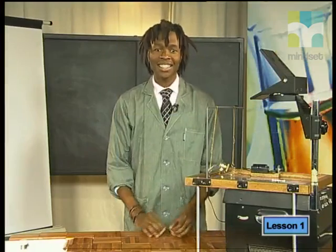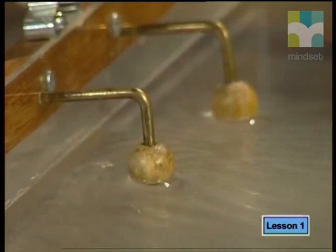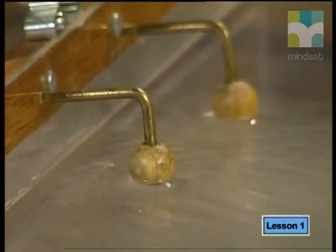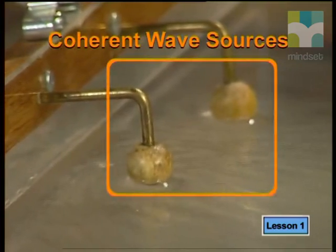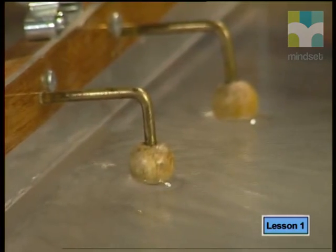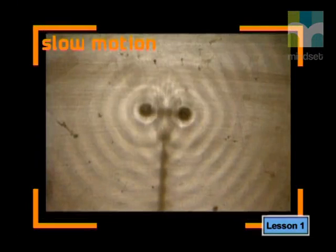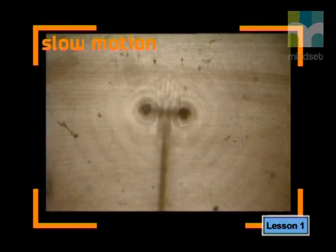We'll need a ripple tank to understand what Young was thinking. Let's go to the laboratory and see it. Here we have two connected vibrating spheres that are placed on the surface of the water near to each other. It is important that they vibrate at the same rate as each other and are in phase with each other. These are called coherent wave sources and produce two sets of circular waves that have the same frequency and wavelength. These circular waves interfere with each other as they radiate outwards.